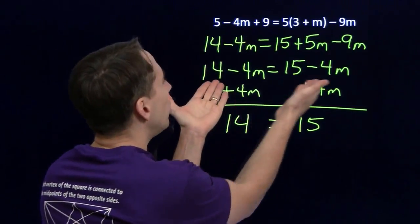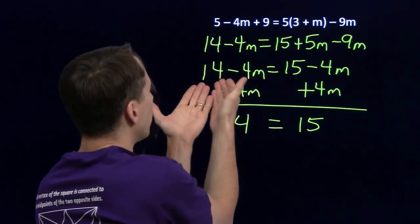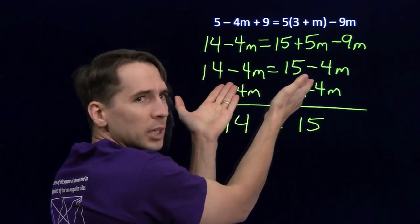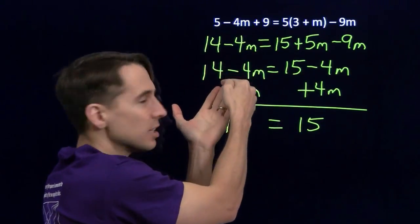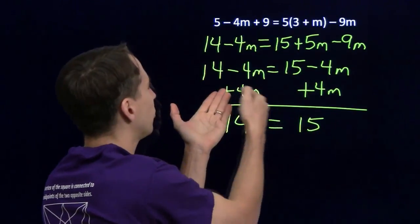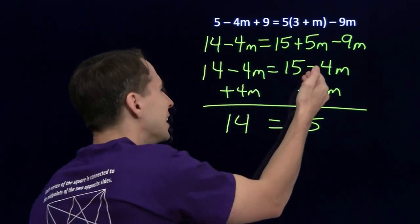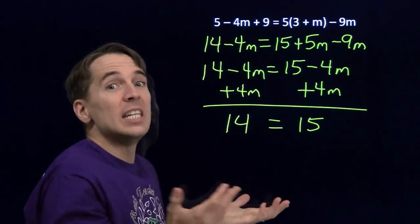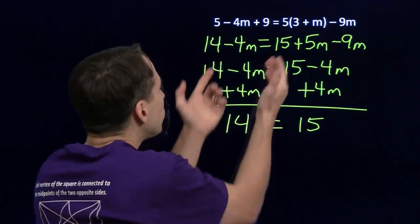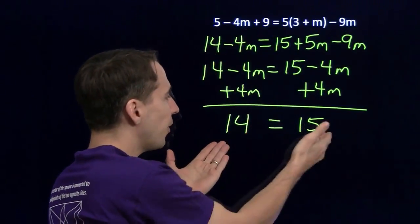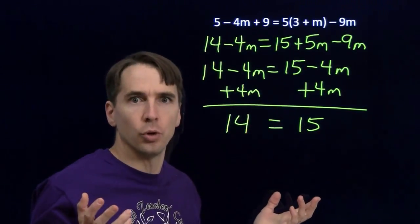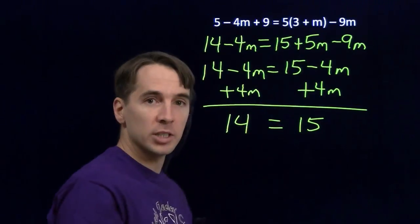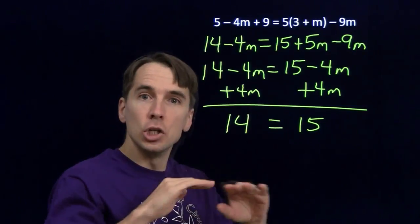That's what this is telling us right here. When we simplified this, we have 14 minus 4m equals 15 minus 4m. No matter what I put in for m here, this side's going to be 1 greater than that side. So no matter what I put in for m, these two can never be equal. And that's what it means when I start with a linear equation and I simplify it and I get an equation that can never be true. That tells me that the original equation can never be true. No value of m works here. So this equation has no solutions.